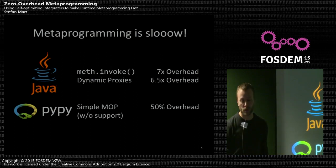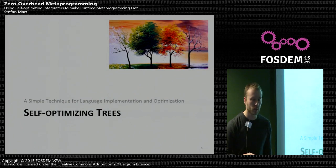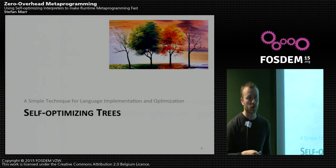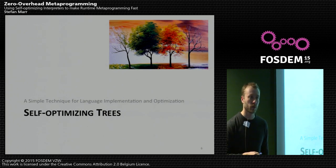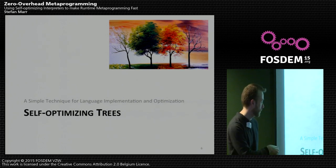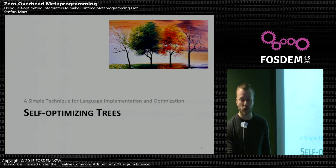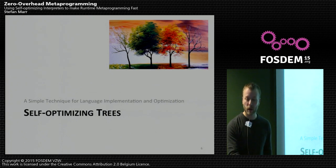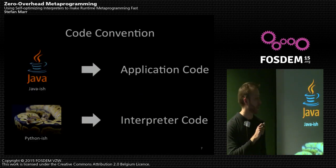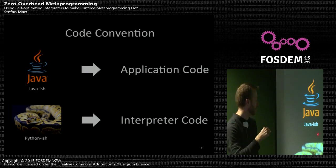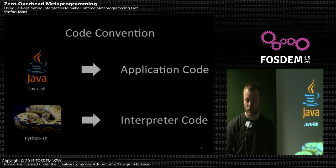We need something better. What we found is a nice way of implementing interpreters, and there we also experimented with those meta-object protocols. I'll briefly show you how we implemented interpreters — it's a very nice idea, not actually mine. If you see Java-like code, that's application-level code; if you see Pythonic code, that's the interpreter-level implementation, just to make things clear up front.